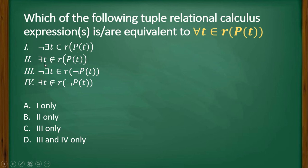there exists t not belongs to the relation where the predicate is true. Now this is also not equal to this or equivalent to this. But here, if you see,